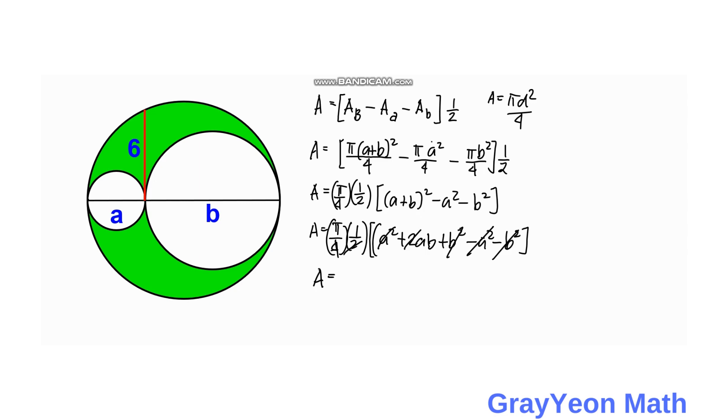So we have the area which is equal to pi over 4 times A times B, or area is equal to pi over 4 AB.